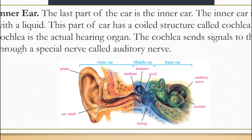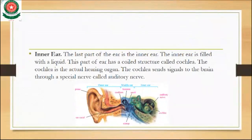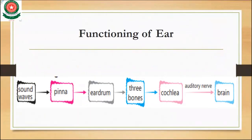Looking at the diagram of the ear: the outer ear has the ear canal and the pinna; the middle ear has the eardrum, hammer, anvil, and stirrup; and the inner ear contains the cochlea filled with liquid and the auditory nerve. The functioning: sound waves pass through the pinna, the eardrum vibrates, the three bones transmit the vibration, it passes through the cochlea, and the auditory nerve connects the ear to the brain.